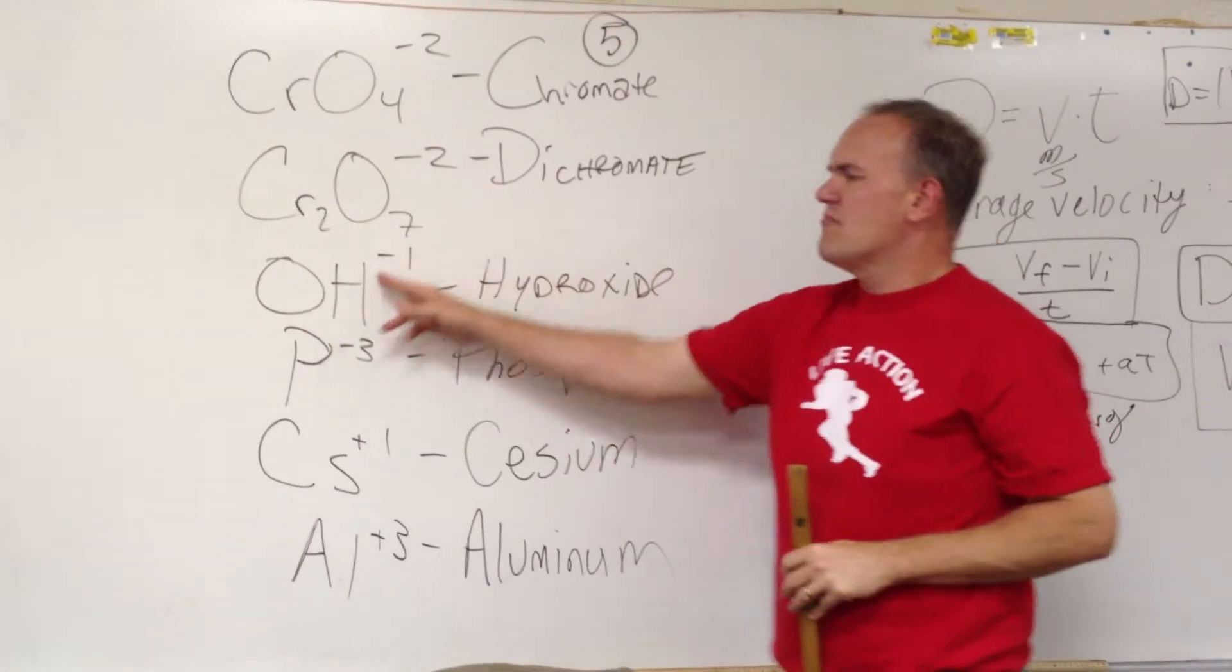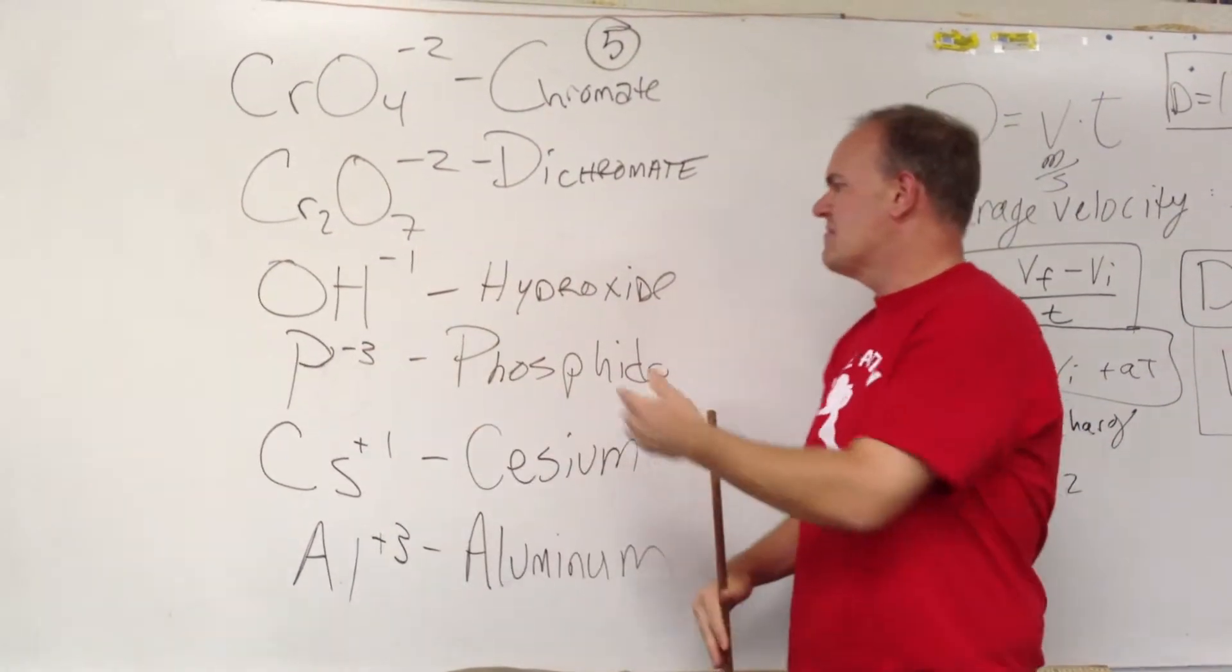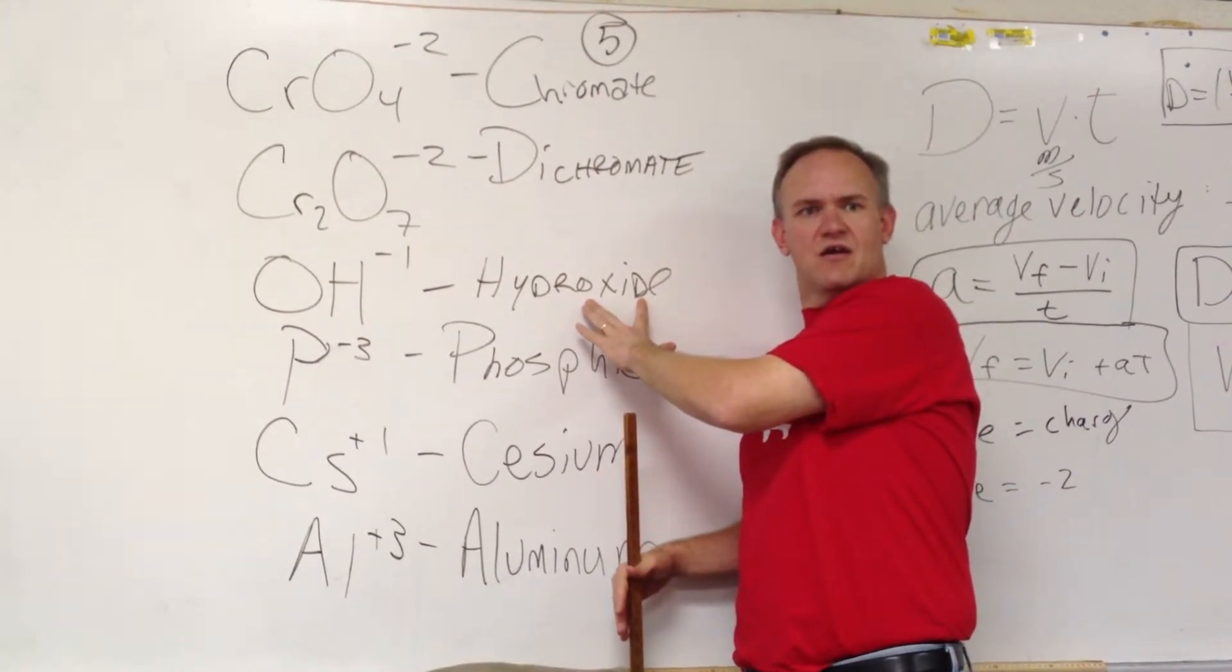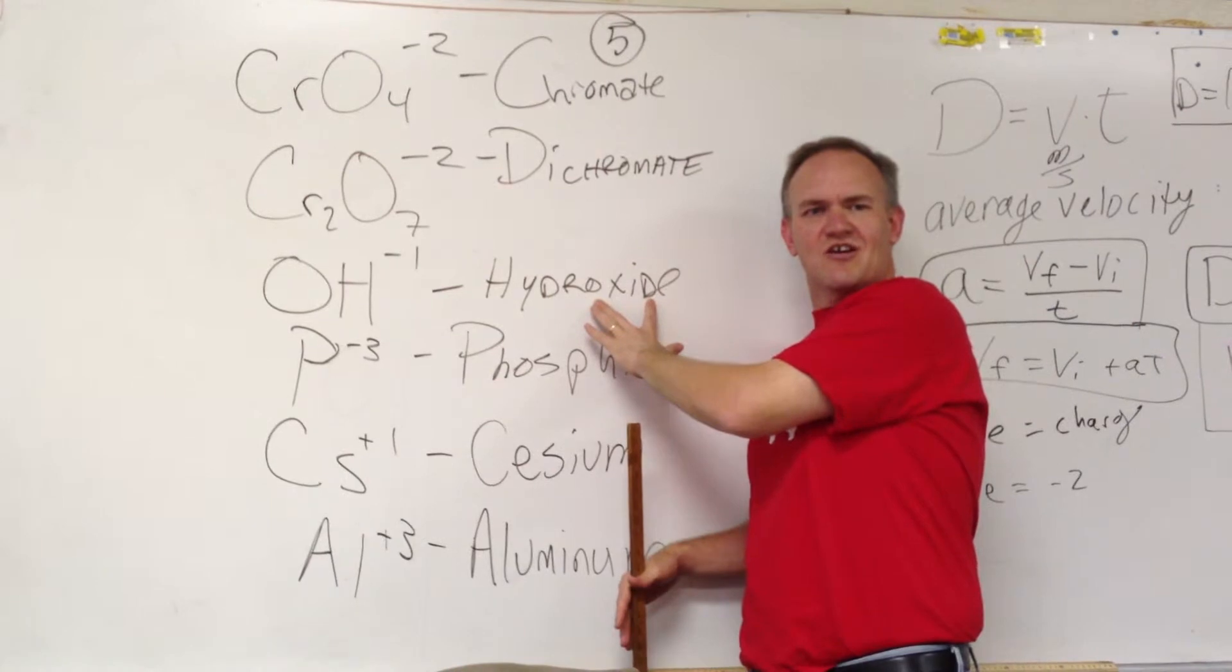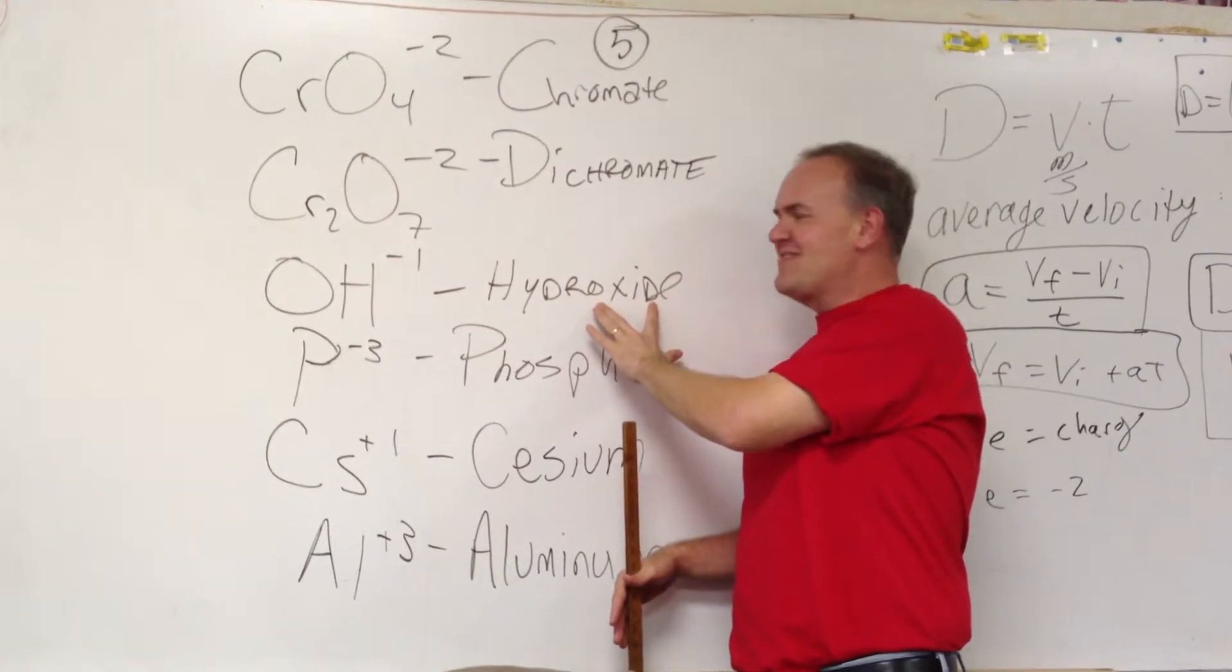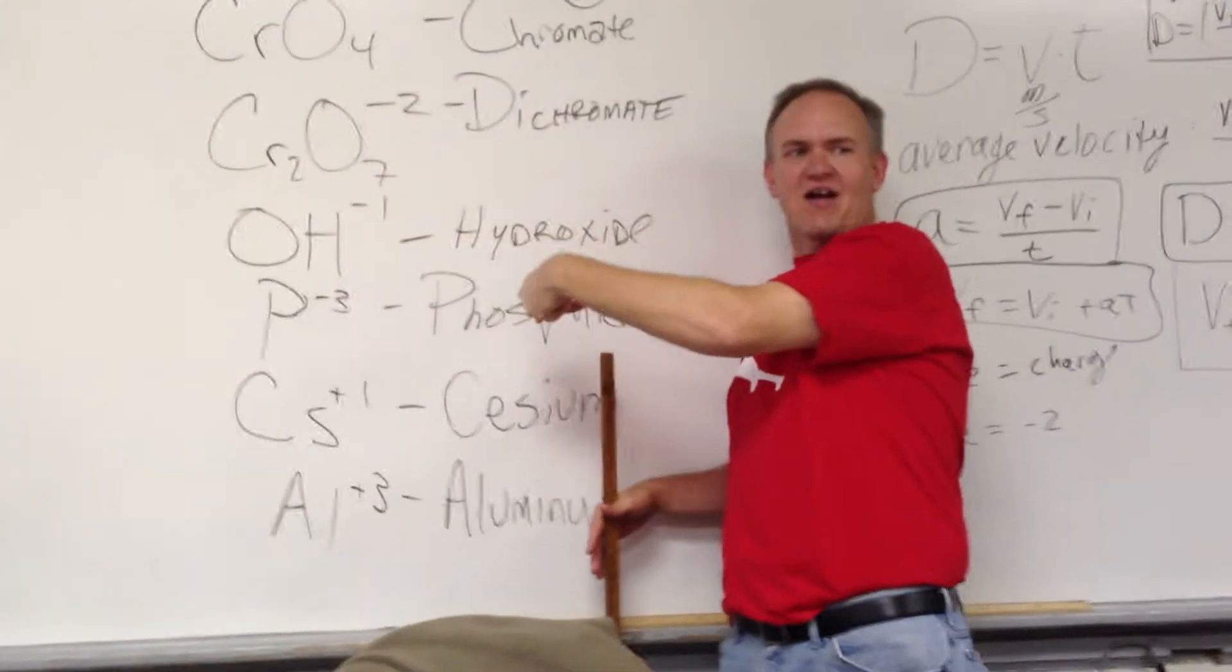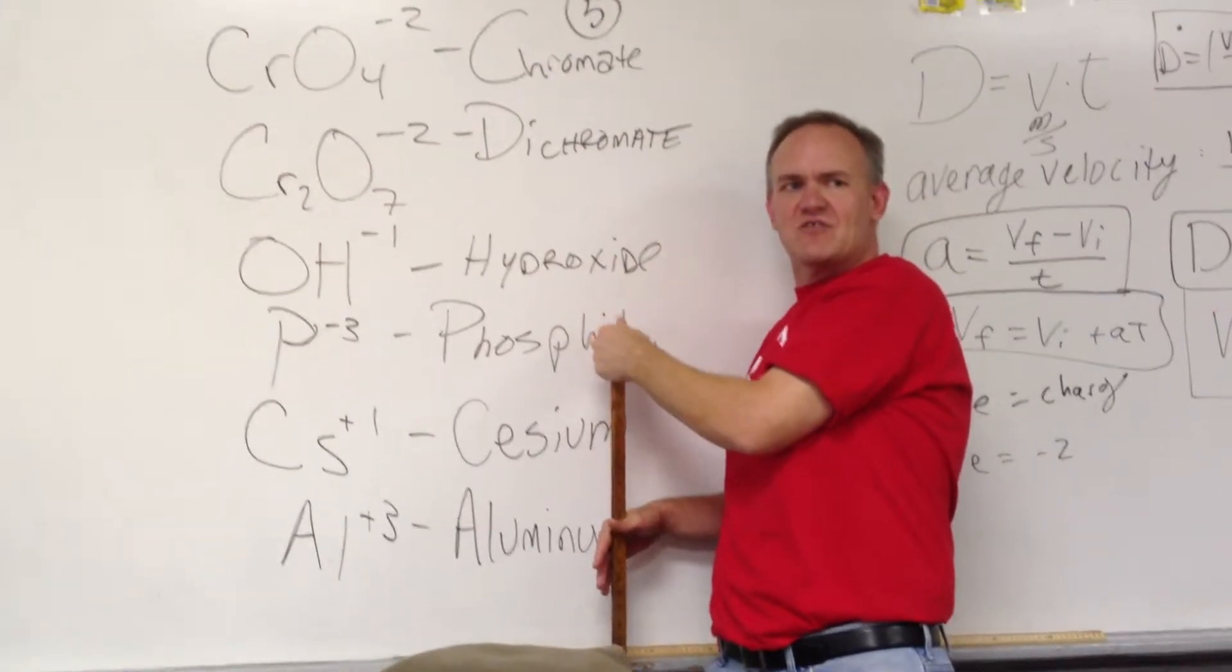And if you have trouble remembering the charge, it's kind of easy. Remember, oxide has a charge of negative two. If it were just oxide, I wasn't saying hydroxide, I was saying oxide. Oxide is negative two.